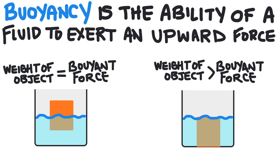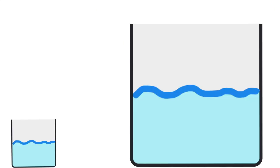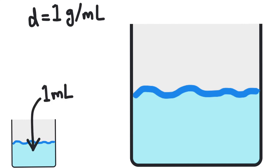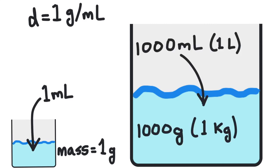So how can we know if an object is going to float or sink? We can compare the density of the object to the density of the fluid that the object is immersed in. Let's use water as the example for the fluid. Water has a density of one gram per milliliter — that means if you have one milliliter of water it has a mass of exactly one gram. So one thousand milliliters, or one liter of water, will have a mass of one thousand grams or one kilogram.